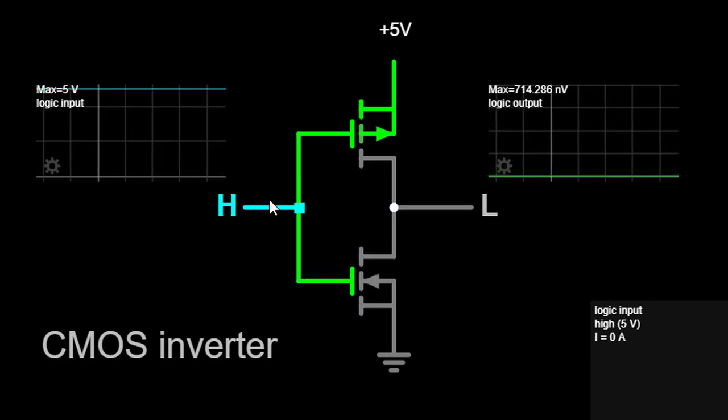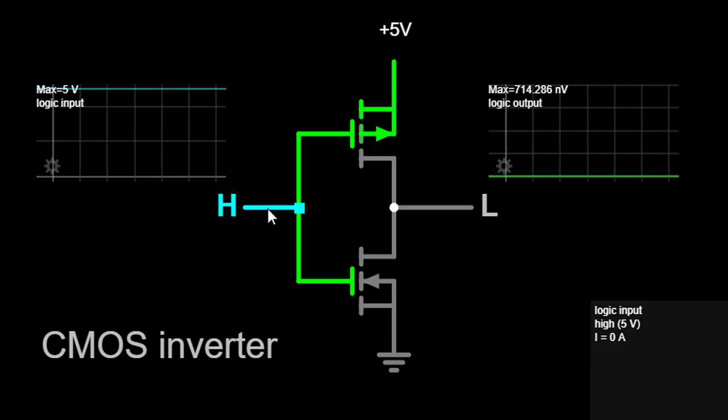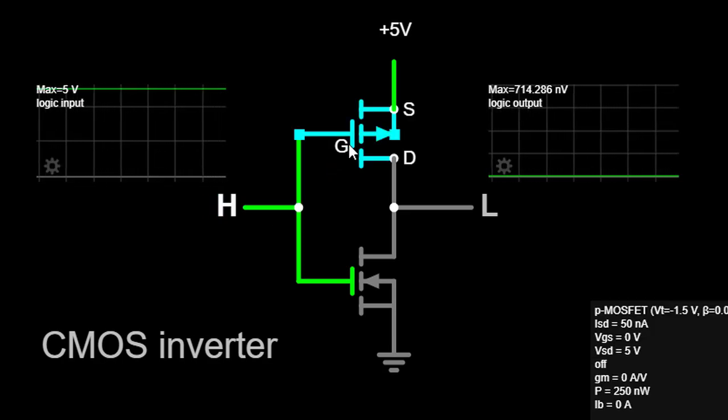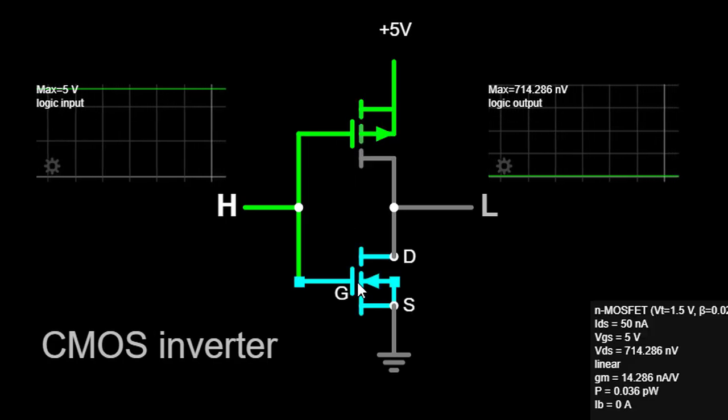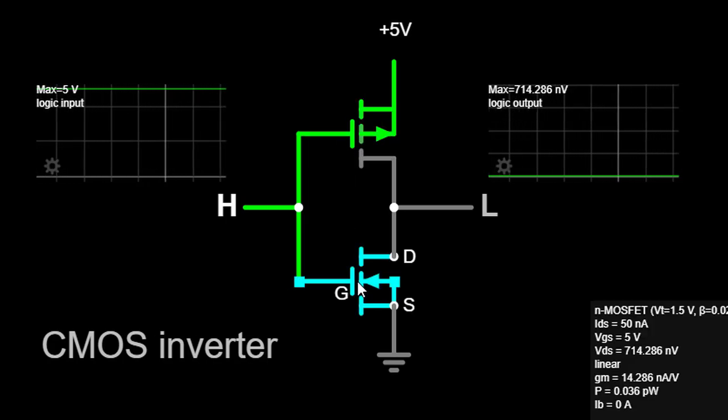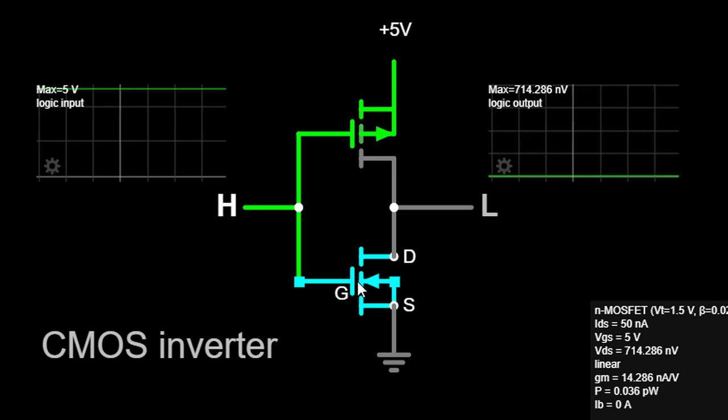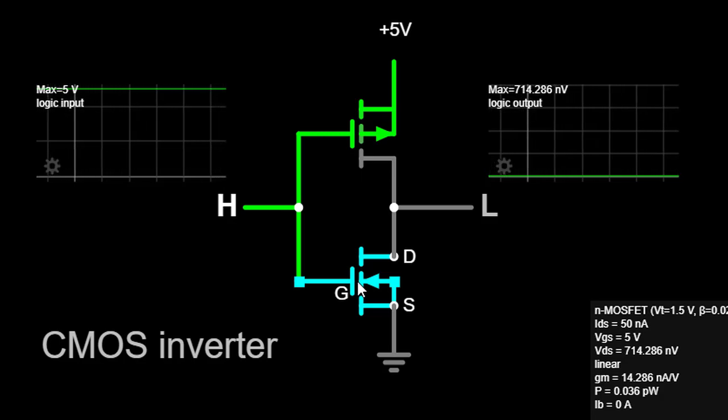When a logical high voltage (logic 1) is applied to the input of the CMOS inverter, the PMOS transistor turns OFF, while the NMOS transistor turns ON. This allows the output node to be pulled down to the logical low voltage (logic 0).